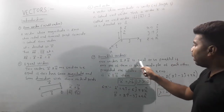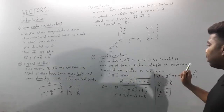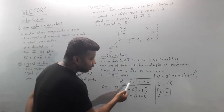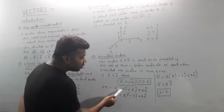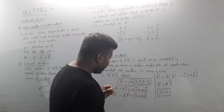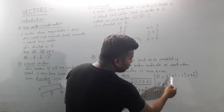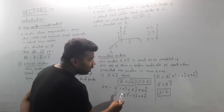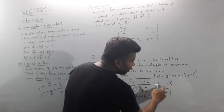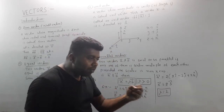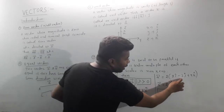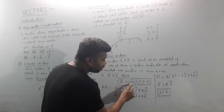Next is the parallel vector. Two vectors A and B are said to be parallel if one of them is a scalar multiple of the other — that is, vector A equals lambda times vector B. For example, if vector A is 4i minus 6j plus 8k and vector B is 2i minus 3j plus 4k, then vector A equals 2 times vector B. So lambda equals 2, meaning the vectors are parallel.